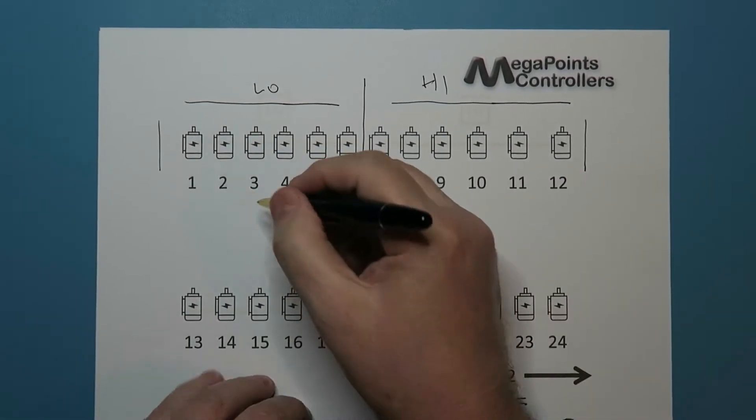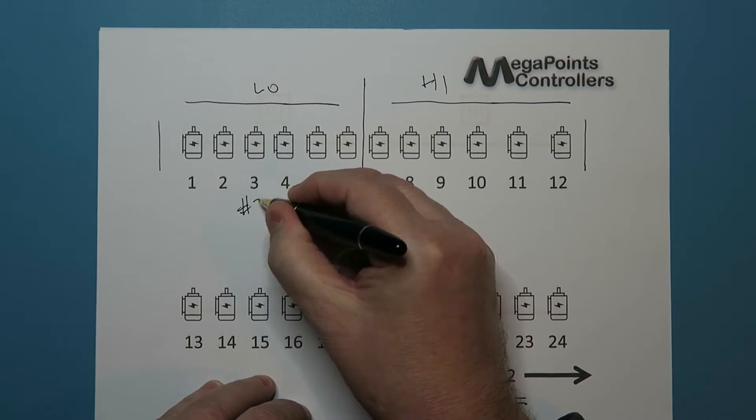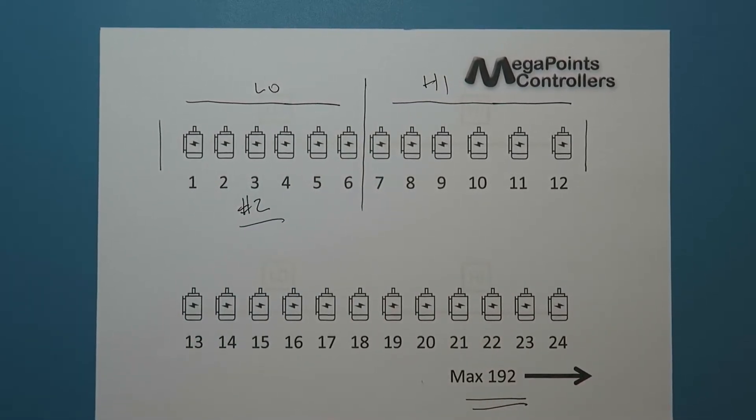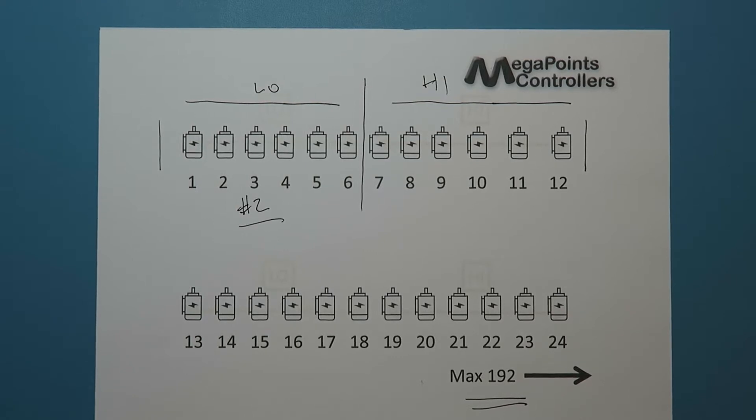Now you may ask why does the first block start at address number two? The reason for that is the multi-panel or device that's controlling it is address number one, so we start at two and build up from there.